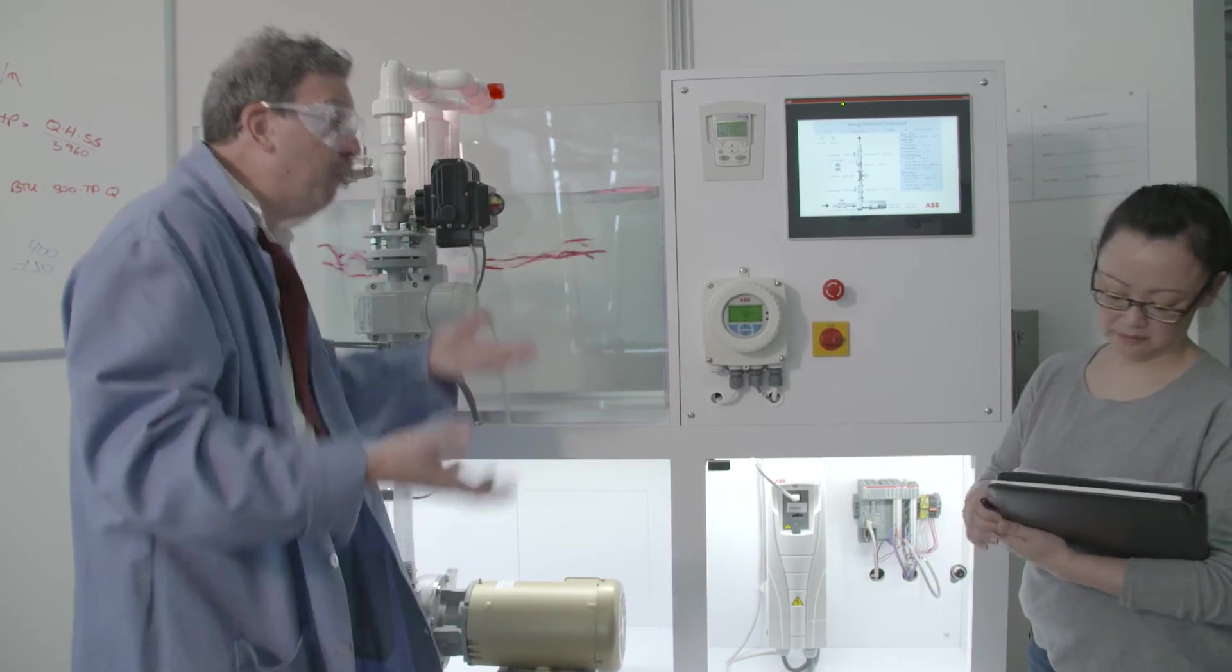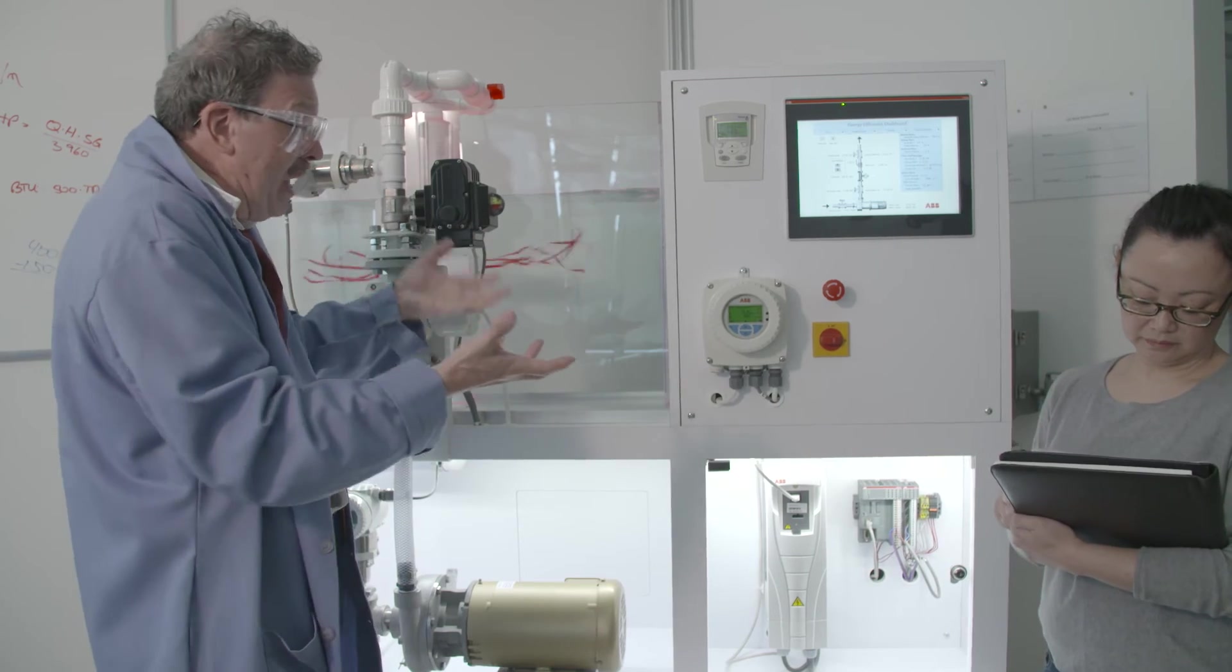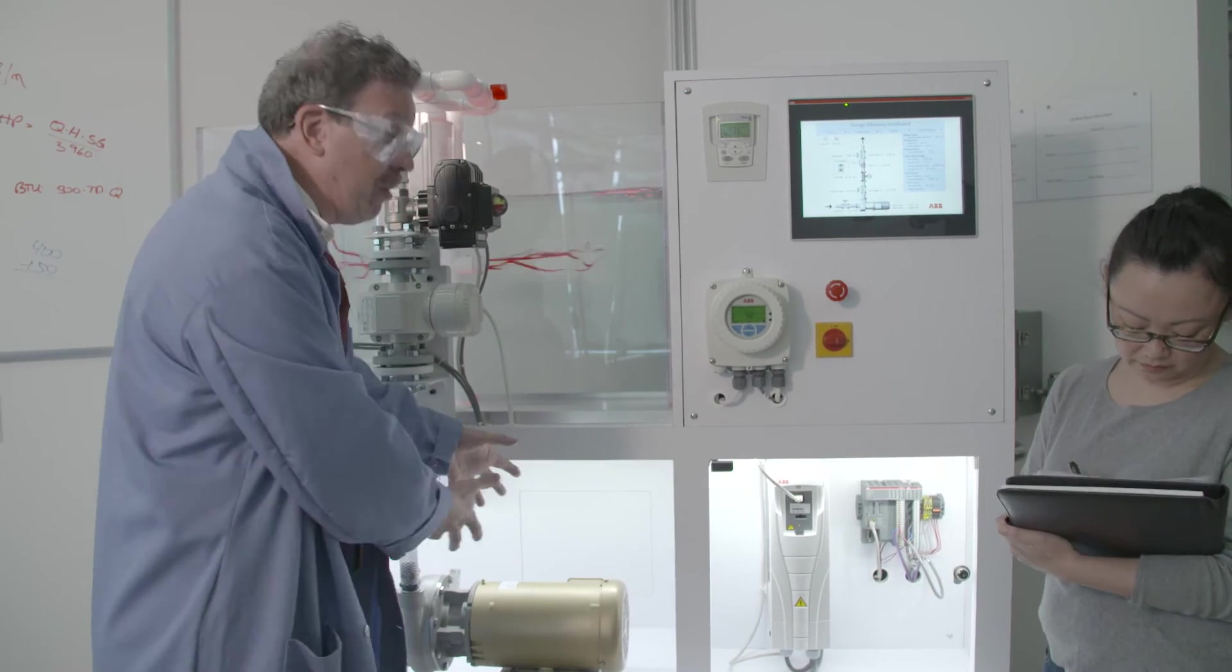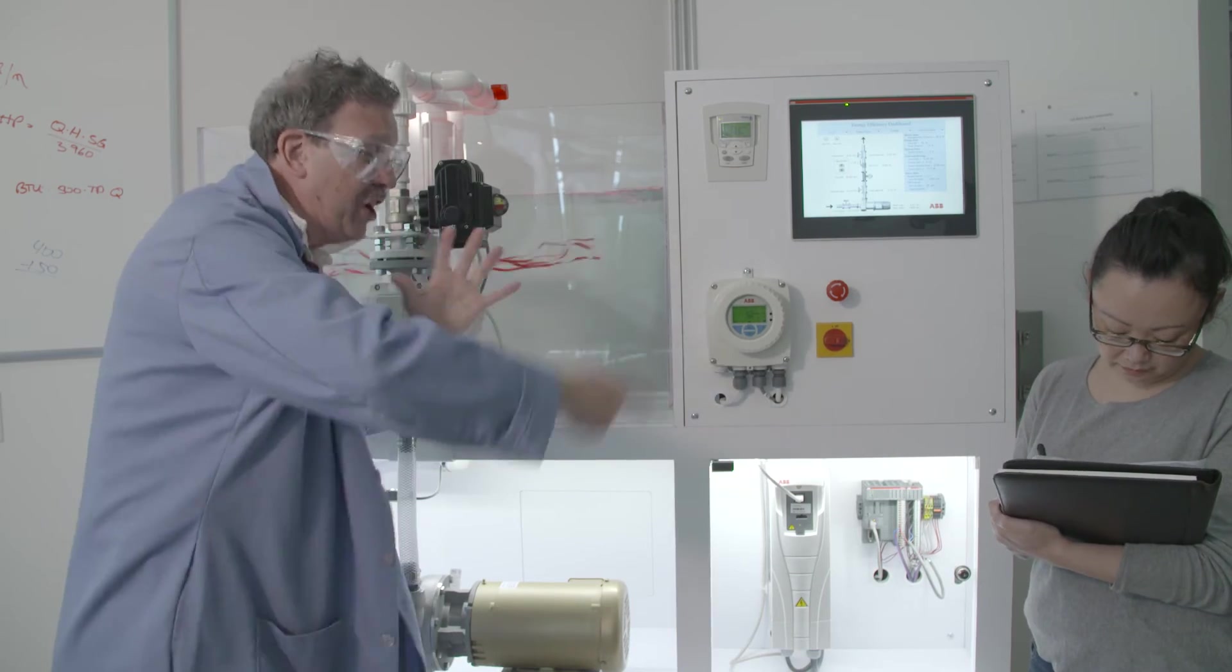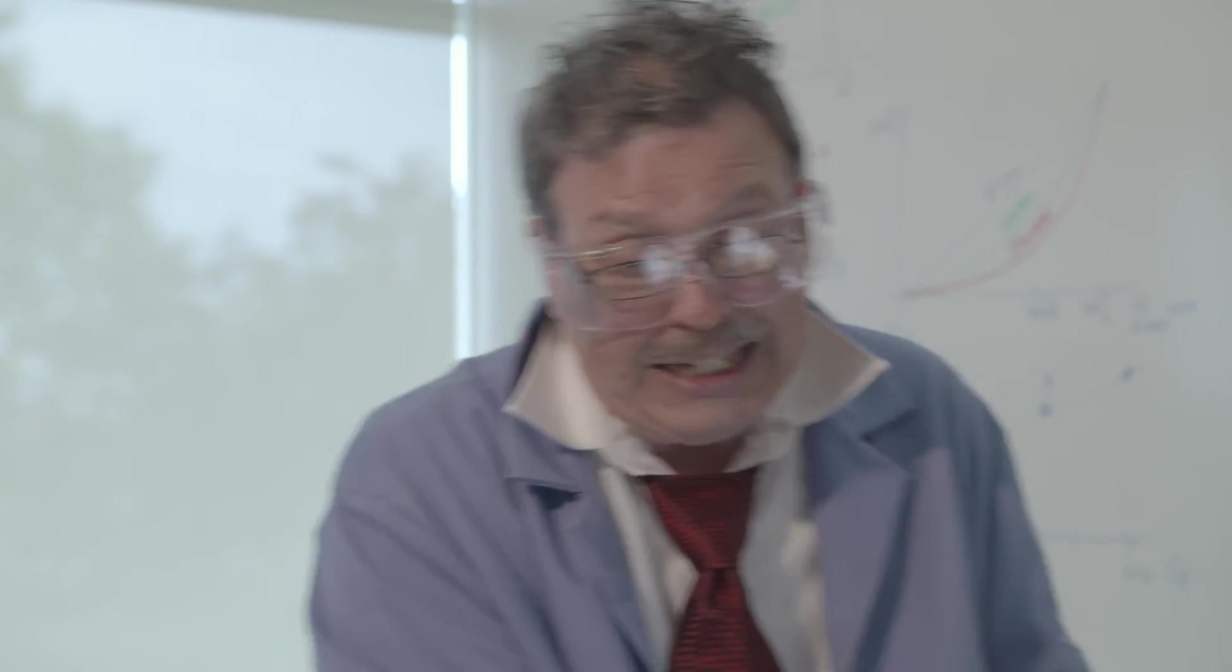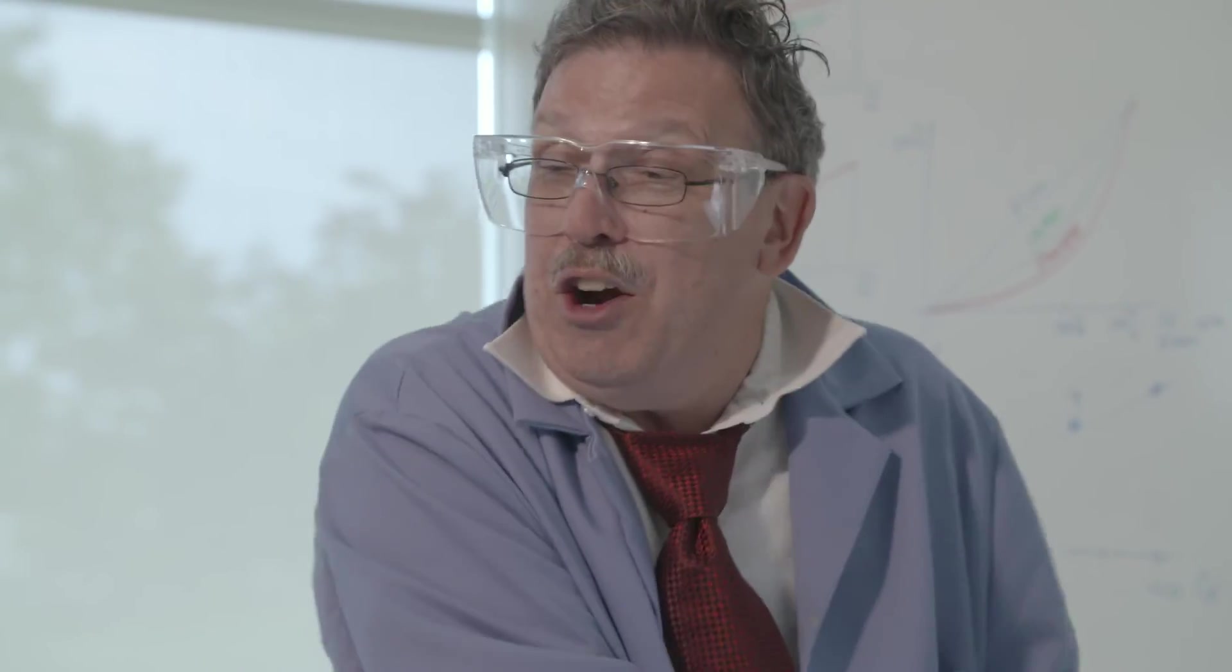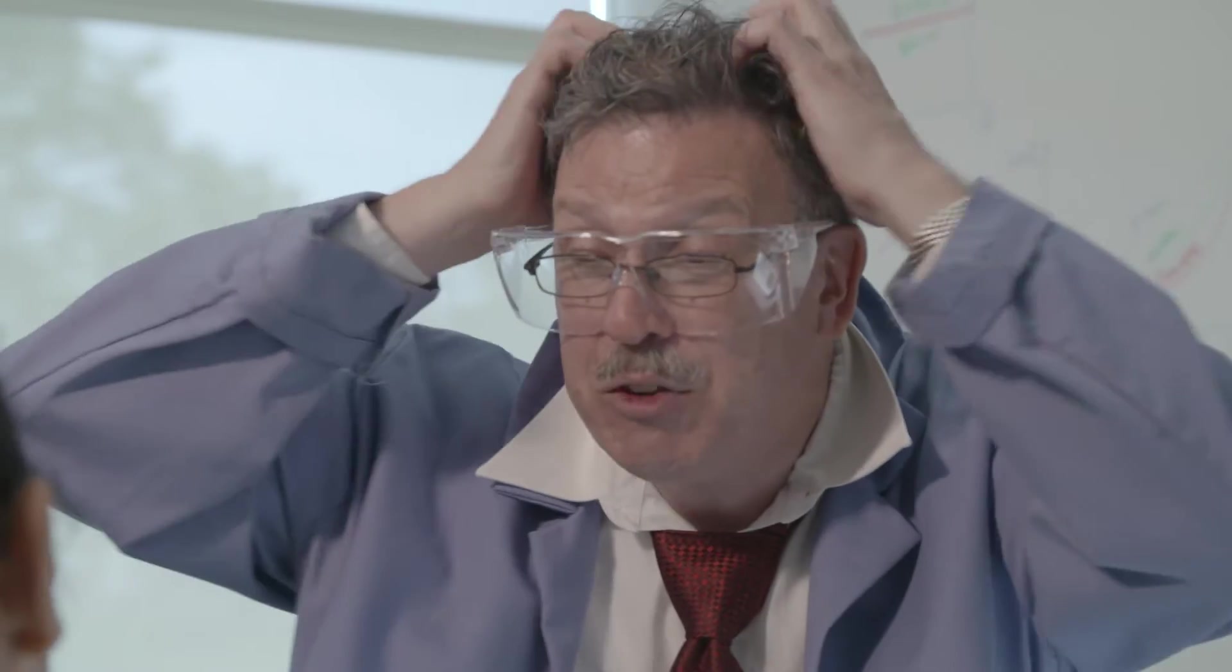How does that work? Variable frequency drives, sometimes they're called VFDs. Sometimes they're called ASDs. Sometimes they're called freak drives. But what they do is they change the frequency of the voltage going to that motor. And by slowing down that frequency we actually slow down the rate of the rotation of the magnetic field inside of that motor. Which means the motor slows down. Which means the pump goes slower. And with that you get less wear and tear on the pump. And with this you've got savings which are just incredible. Are you okay professor?